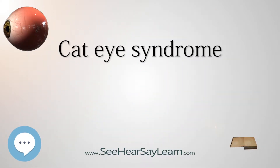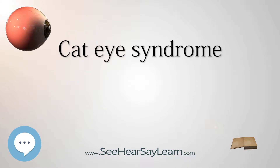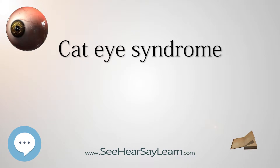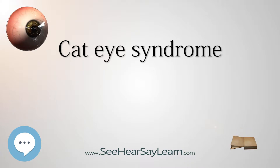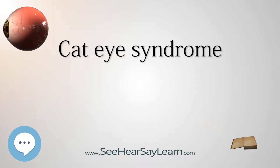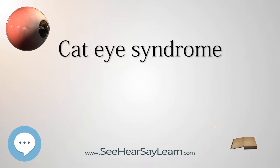Cat Eye Syndrome, CES, or Schmid-Fraccaro syndrome, is a rare condition caused by the short arm (P) and a small section of the long arm (Q) of human chromosome 22 being present 3 times (trisomic) or 4 times (tetrasomic), instead of the usual 2 times.